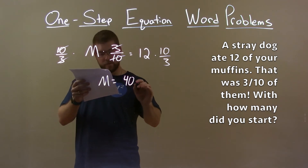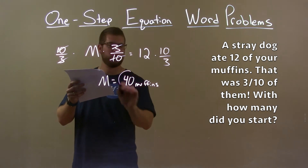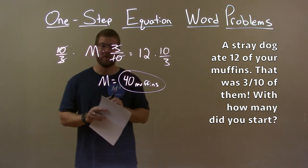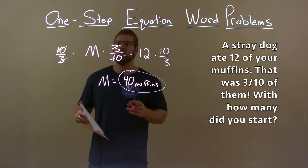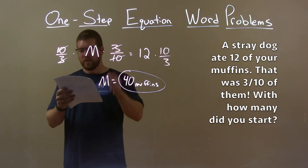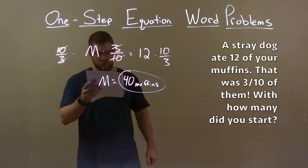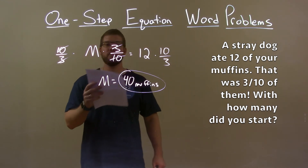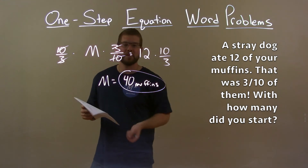So 40 muffins is how many we had before that stray dog ate 12. Quick recap: we were given the word problem — a stray dog ate 12 of your muffins, that was three tenths of them all, with how many did you start? With that information, we wrote an equation.